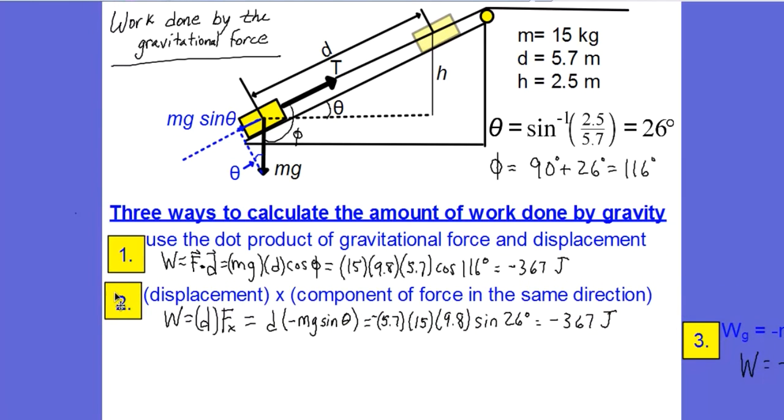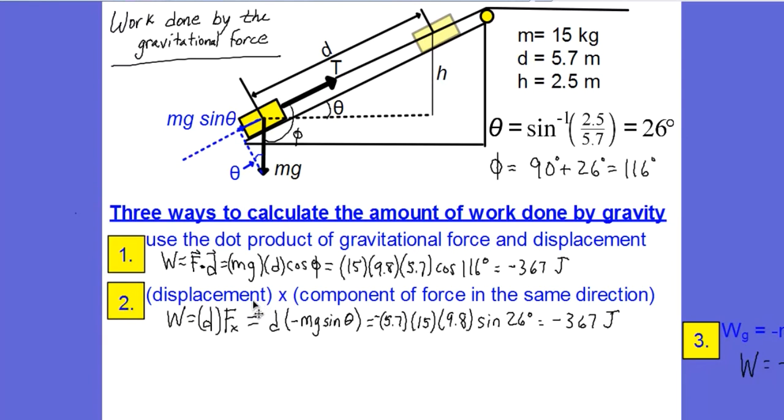Or we can think of it a slightly different way. We can think of the work as the displacement times the component of force in the same direction as the displacement, which is basically what the dot product is saying. But this is just one way, another way of looking at it. So F_x is the component of the force that is on the same axis as the displacement. So it is in the opposite direction. The displacement is up the ramp and the component of force shown here with the blue dotted line is down the ramp. So that's why we have the negative sign there. And we can show that if this angle is theta here, this angle in here is also theta. And so mg sine theta, because this component is opposite of this angle right here. So that is sine theta. So mg sine theta is the component of force in the direction of the displacement, negative because it's in exactly opposite direction, and times d. Plug in all the numbers, and we see that we get the same answer.